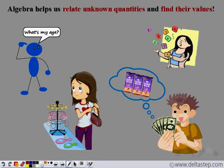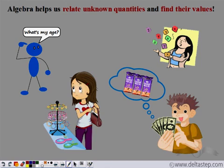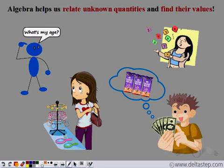When we started learning algebra, we used variables to represent unknowns. Then we formed expressions using those variables. And now we can equate these expressions and solve for the unknowns. So let us see how we can use algebra to solve for unknowns in our everyday life problems.